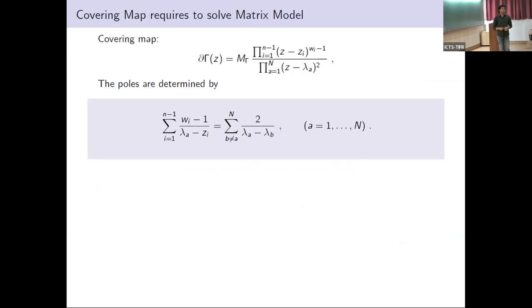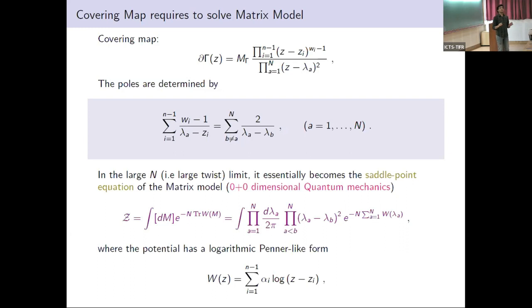To compute the correlator, we need to know the covering map. The genus zero covering map has this rational form where you don't know the poles. To determine the poles, we have a set of equations, but solving them is a very difficult problem because they are coupled equations. But in the large N limit, when the twist operator has large dimension and the surface wraps largely, these equations are nothing but a saddle point equation to a matrix model. Matrix model means basically a quantum mechanics at 0+0 dimension.